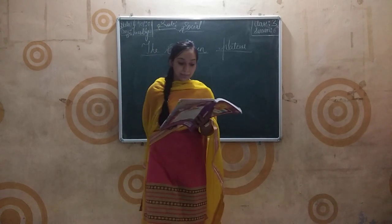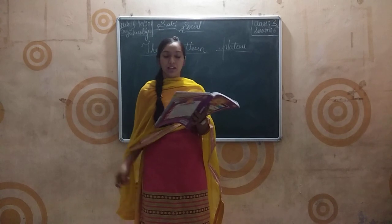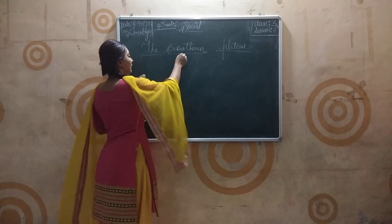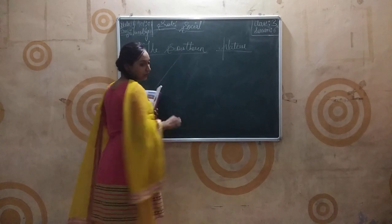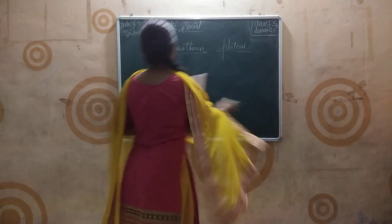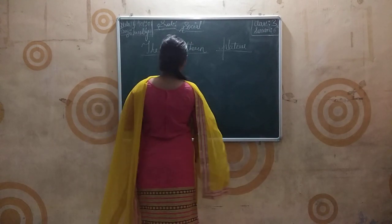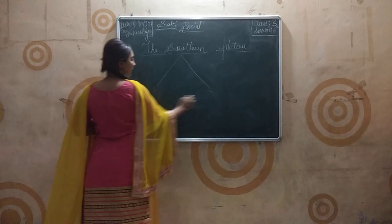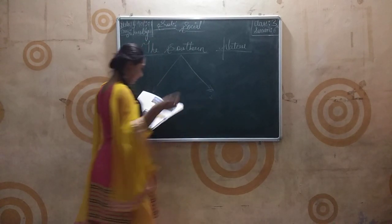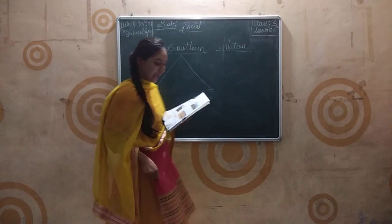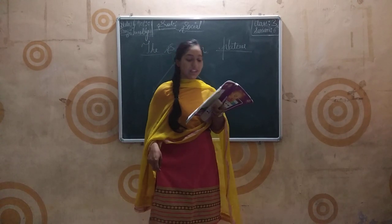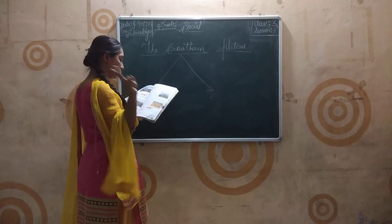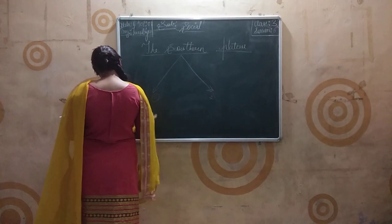The southern plateau is divided into two parts. Which are those two parts? The first is the central highlands.